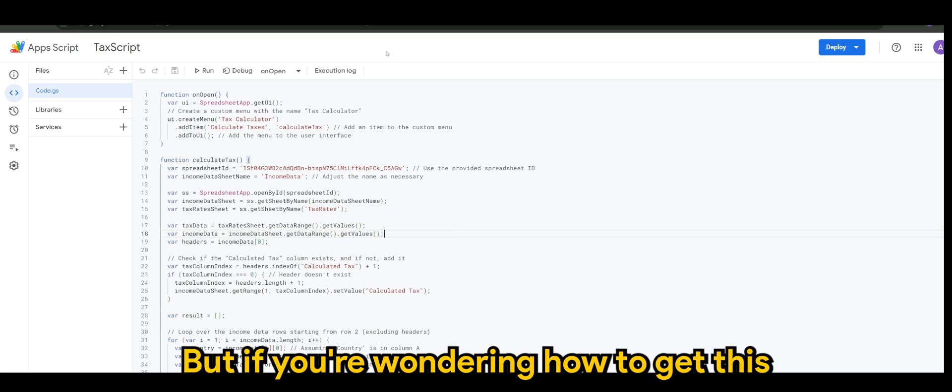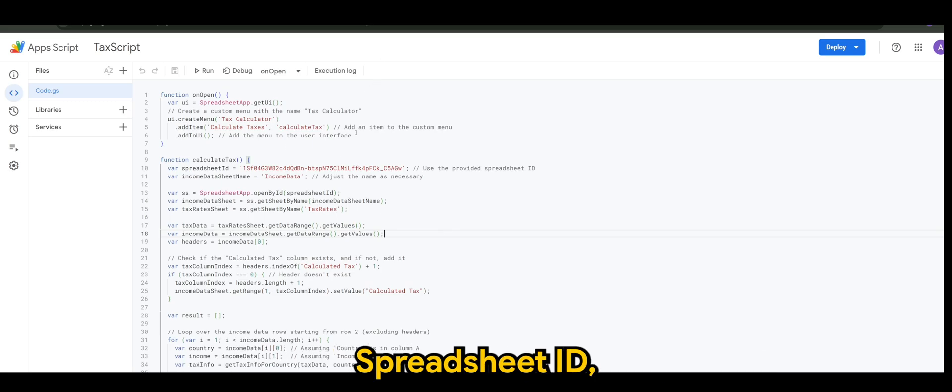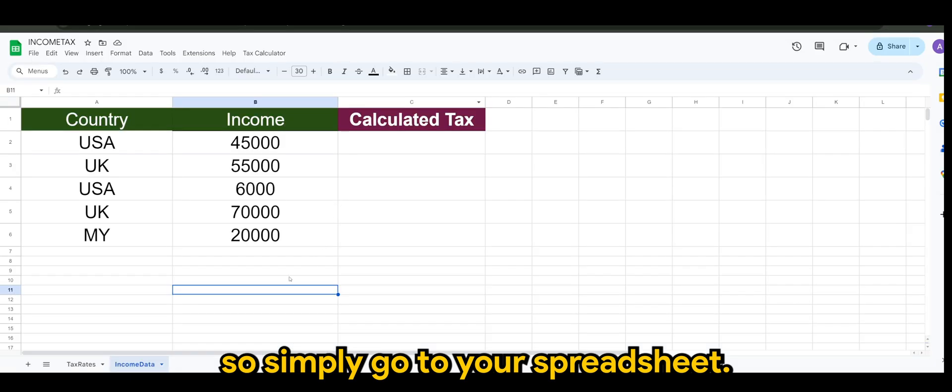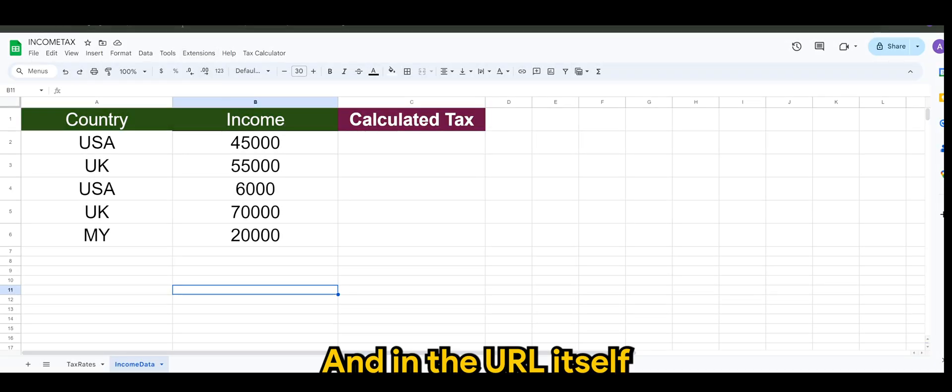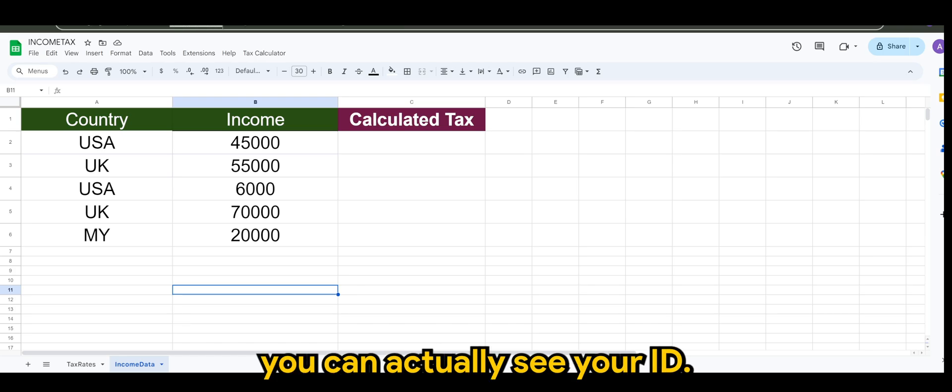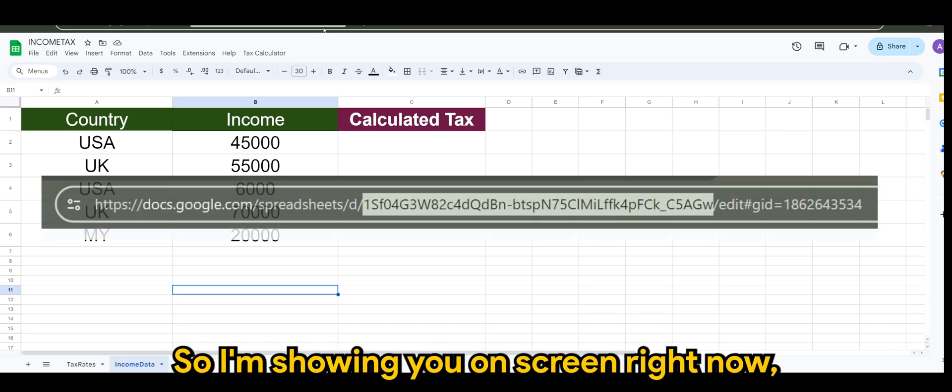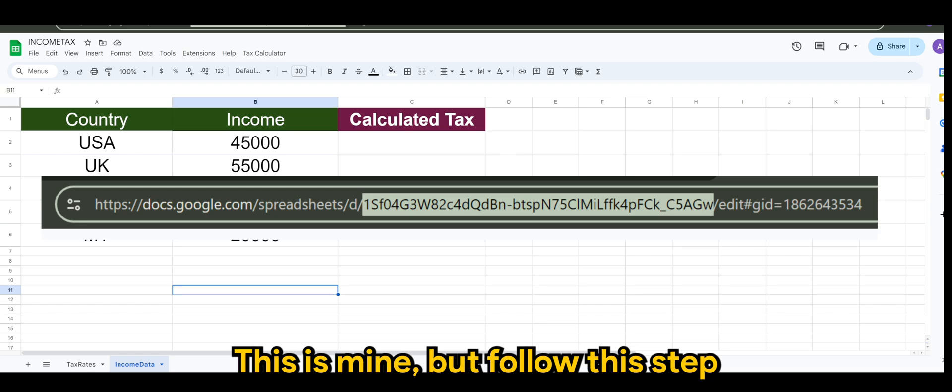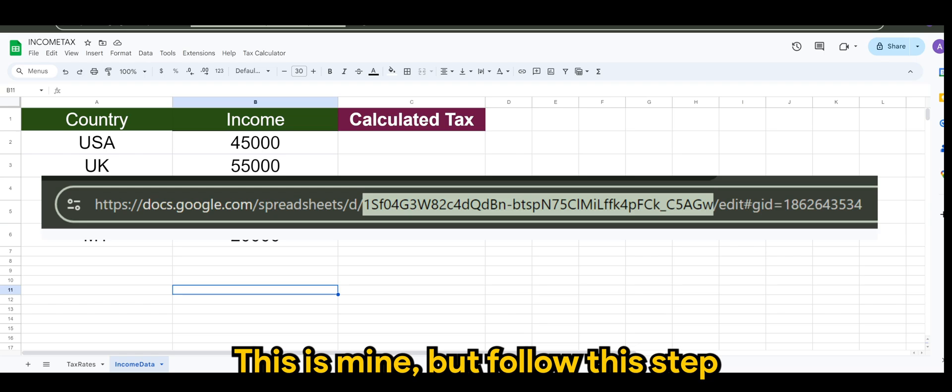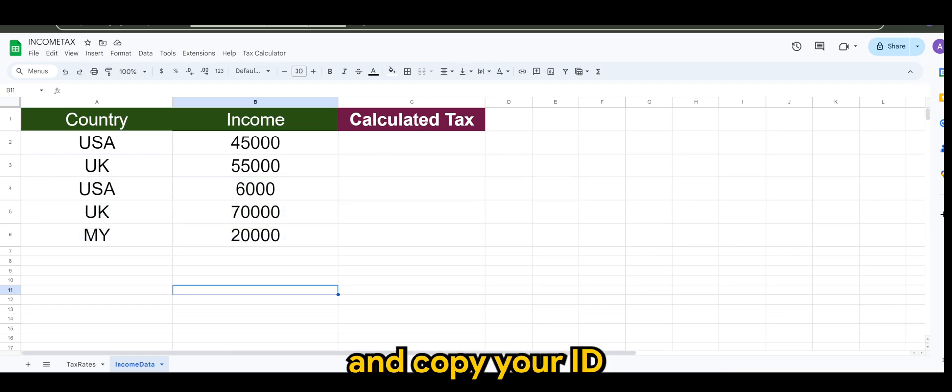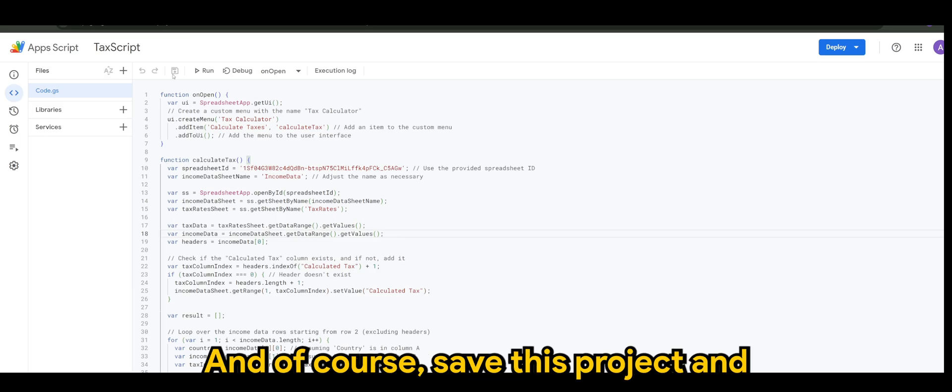If you're wondering how to get the spreadsheet ID, simply go to your spreadsheet, and in the URL itself you can actually see your ID. I'm showing you on screen right now. This is mine, but follow this step and copy your ID and replace it in the code.